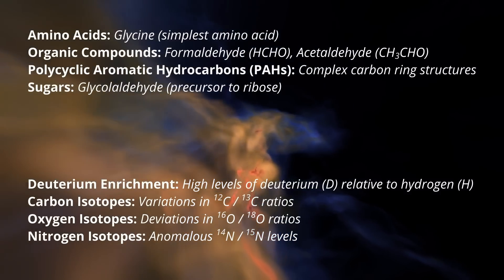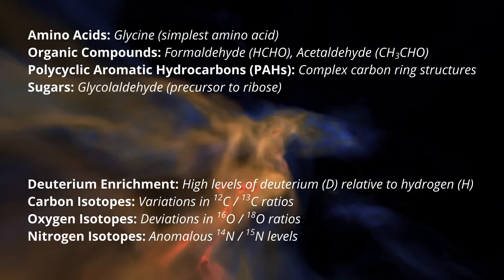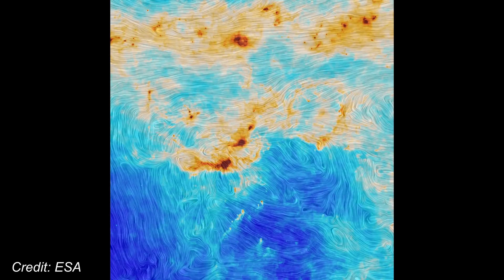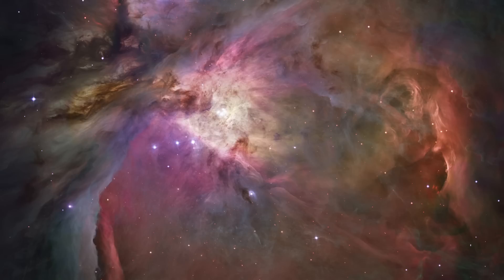In particular, nebulae and filamentary structures within galaxies might provide sustainable environments for LENR. These regions often feature localized electromagnetic fields, high energy particle interactions, and plasma dynamics, all of which could create the conditions necessary for LENR to occur.